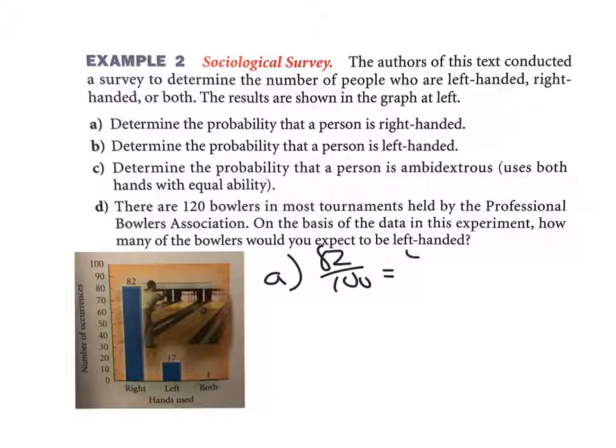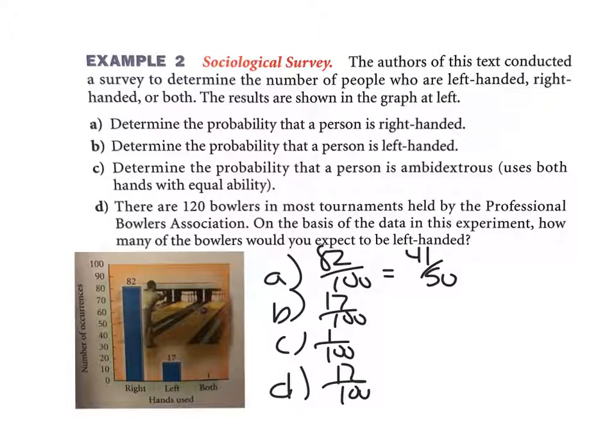Part B, left-handed, there were 17 in the study, so 17 out of 100, that does not reduce. C, ambidextrous, both hands equal, just one out of 100. And then part D, there are 120 bowlers in most tournaments, how many would be left-handed? Well, you take your 17 over 100, or 17%, multiply it by the 120, and that's going to tell you exactly where it is. I'm punching that in right now and it is 20.4, so we would say about 20 of them.